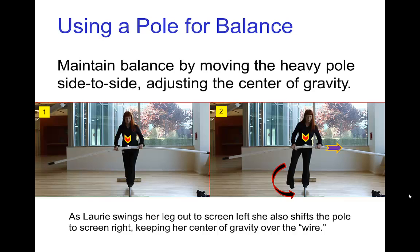We often see tightrope walkers carrying a pole. One of the things the pole is useful for in terms of maintaining balance is if you have a heavy pole, you can adjust the total center of gravity by shifting the pole from side to side. Here we see Lori standing on a pipe, and as she's crossing one foot in front of the other to walk forward, she has to bring her leg to the screen left side, so she naturally shifts the pole to the screen right side, keeping the total center of gravity over her foot.